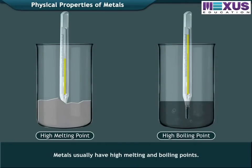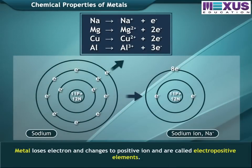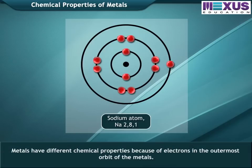Metals usually have high melting and boiling points. Metals lose electrons and change to positive ions, and are called electropositive elements. Metals have different chemical properties because of the electrons in the outermost orbit of the metal atom.